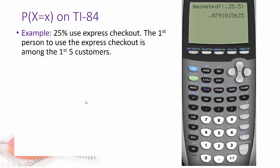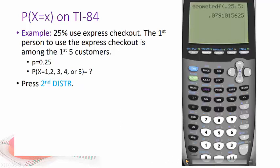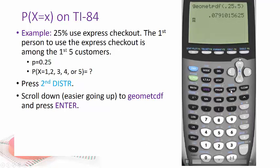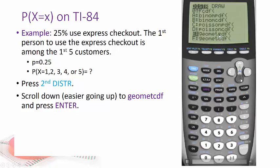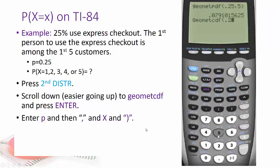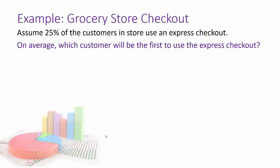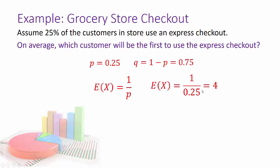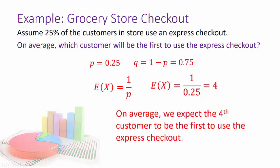There's a much faster way using the calculator. Press second, Distribution, and this time look for geometcdf — scroll up, select CDF for cumulative probability. Enter P = 0.25, then X = 5 (the highest value), press Enter, and you get the same value calculated before. Finally, on average which customer would be the first to use express checkout? With P = 0.25, the expected value = 1/P = 1/0.25 = 4. We'd expect the fourth customer to be the first to use the express checkout.